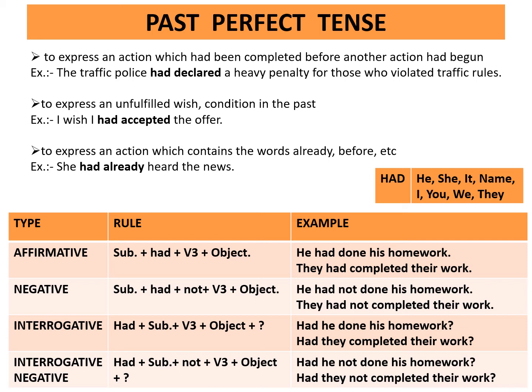Affirmative rule: subject plus had plus third form of the verb plus object. Example: He had done his homework. They had completed their work. Negative rule: subject plus had plus not plus third form of the verb plus object. Example: He had not done his homework. They had not completed their work. Interrogative rule: had plus subject plus third form of the verb plus object plus question mark. Example: Had he done his homework? Had they completed their work?